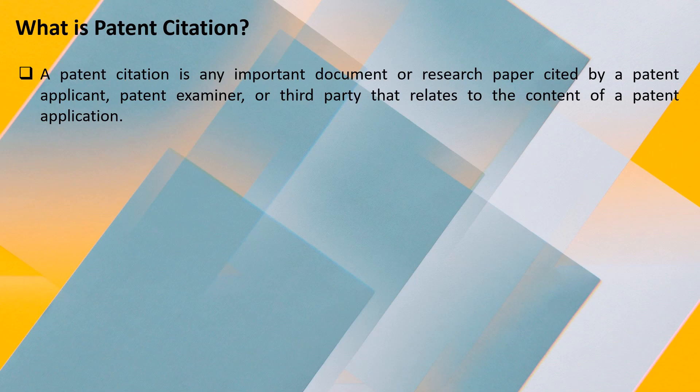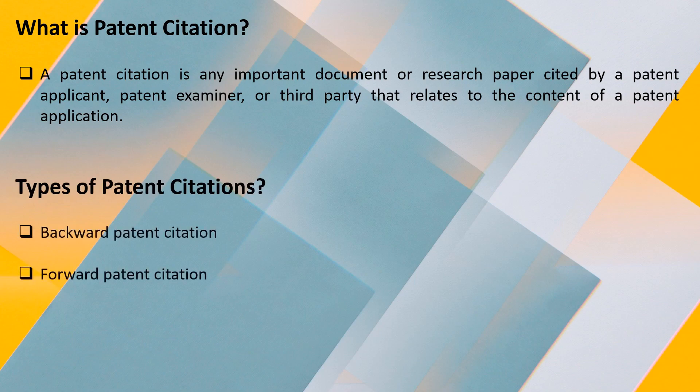At the end of this session, I will also show you a demo by going through a patent application and show you the citations mentioned below. So, basically those are patent citations — they are related to the content of a patent application. Now, there are two kinds of patent citations: backward patent citation and forward patent citation.